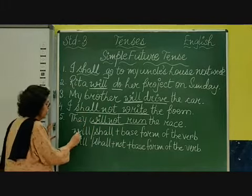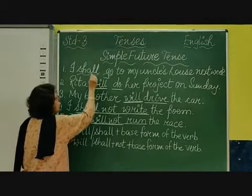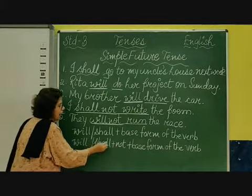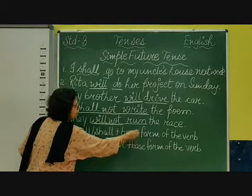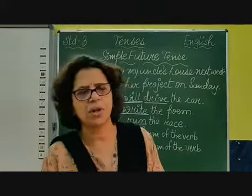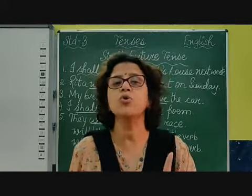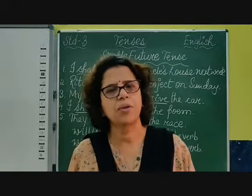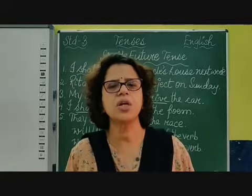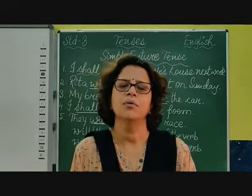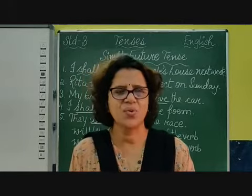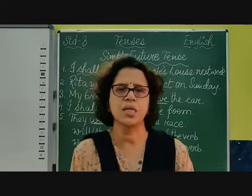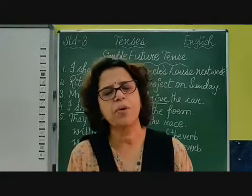So in simple future tense, remember children: use 'will' or 'shall' plus the base form of the verb. For negative sentences: 'will not' or 'shall not' plus the base form of the verb. With 'I' and 'we', we use 'shall' — you can also use 'will'. Will and shall are followed by the original form of the verb. For example: 'We shall study tenses next week', or 'He will not go to his uncle's house next week.' In this way, positive and negative sentences in simple future tense can be written.